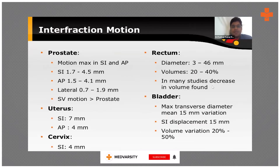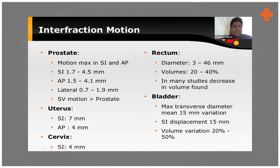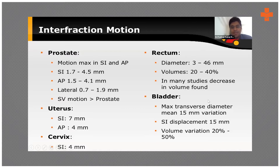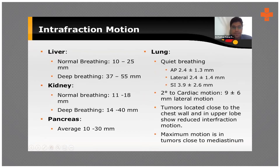These are examples of how organs move and how 4D CT helps us. Even the prostate can move anteroposteriorly up to 1.5 to 4 mm, and superior-inferior up to 1.5 to 4.5 mm. The uterus, bladder, and surrounding organs also move, since they are not completely fixed. The bladder especially changes its shape and structure depending on the amount of urine inside it, and the bowel above the bladder can shift based on bladder volume — affecting the treatment zone.